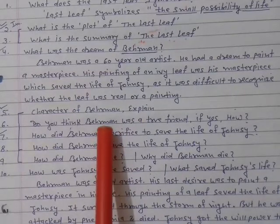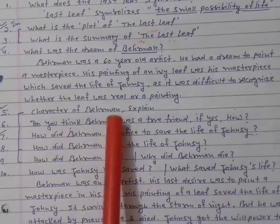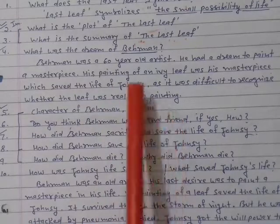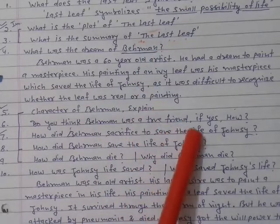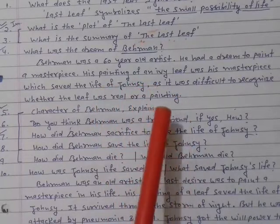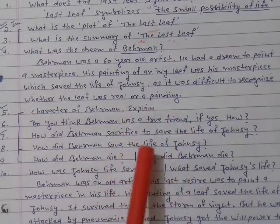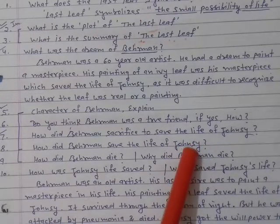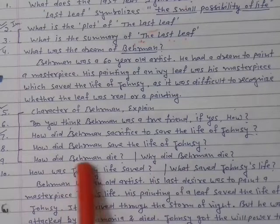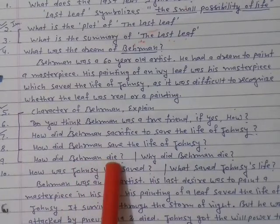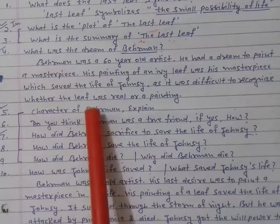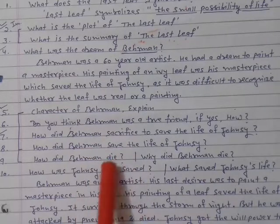So he sacrificed his life to save Johnsy's life. He was a true friend because he sacrificed his life. How did Behrman save Johnsy's life? By drawing a realistic leaf on the wall outside her window — Johnsy was convinced and took the painting of the leaf for real. How did Behrman die? He died of pneumonia because of painting throughout the stormy night to save Johnsy's life. The answer to all these related questions is essentially the same; you only need to change one or two lines.